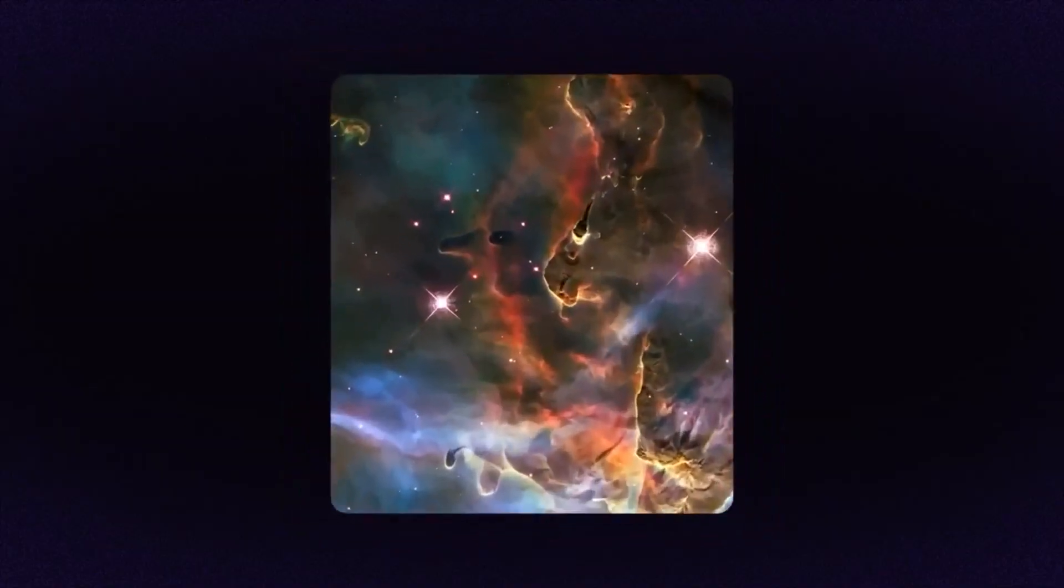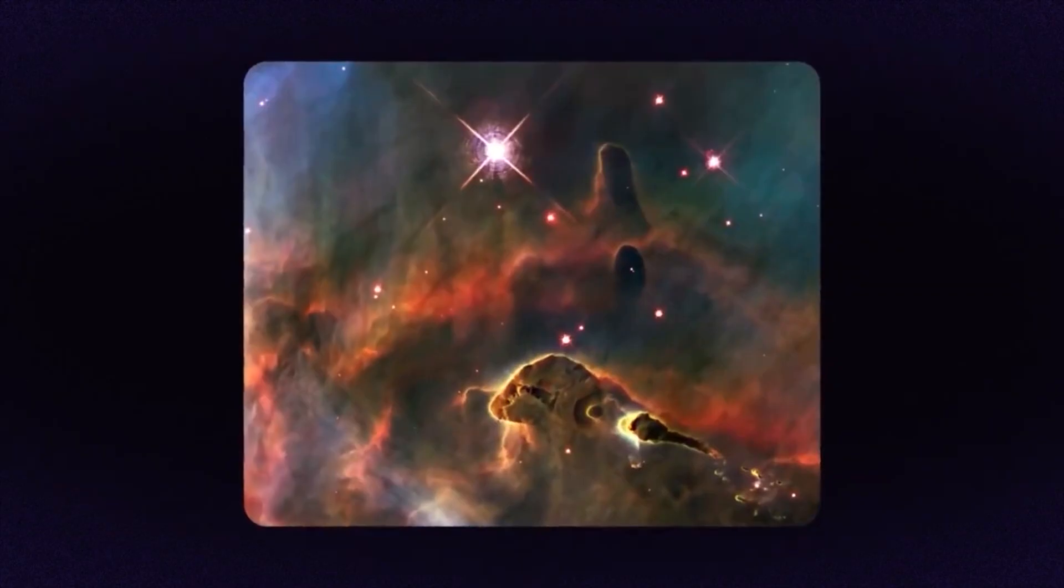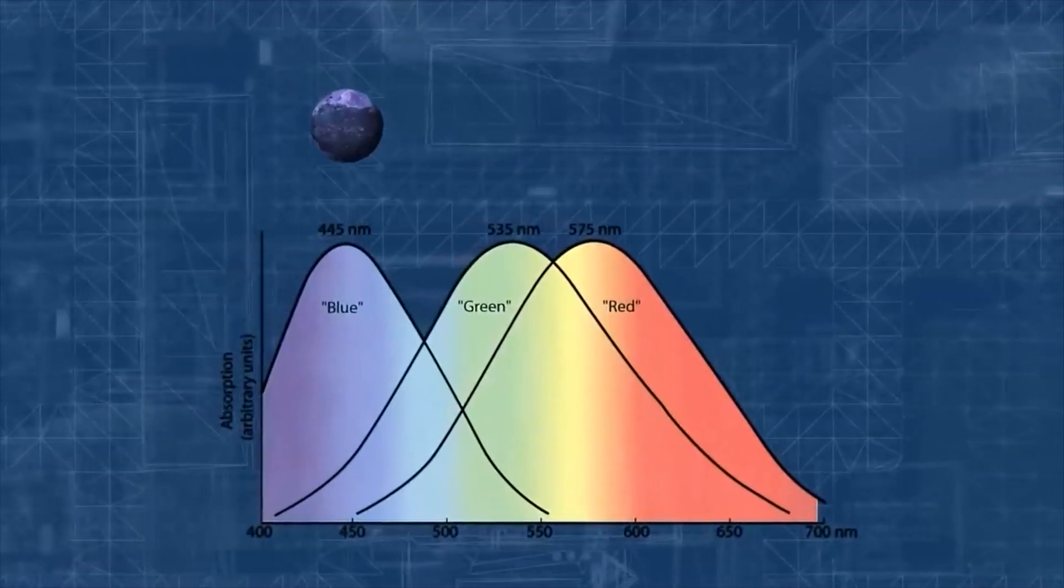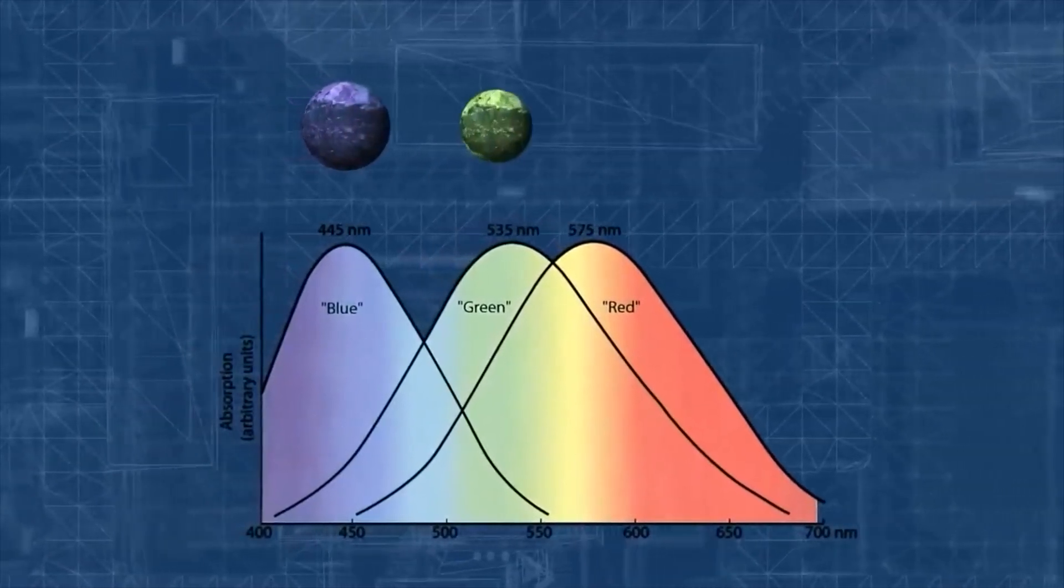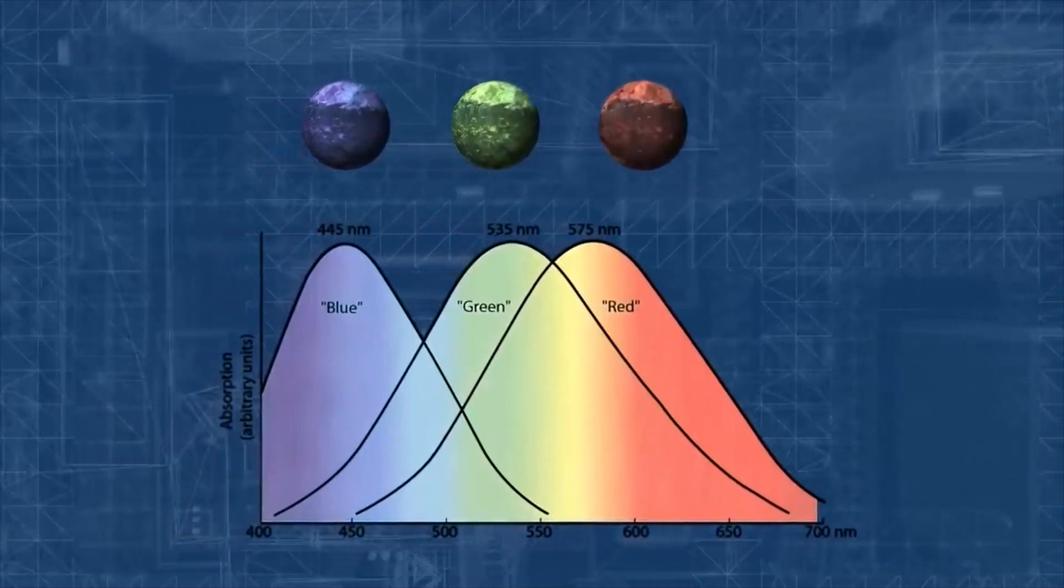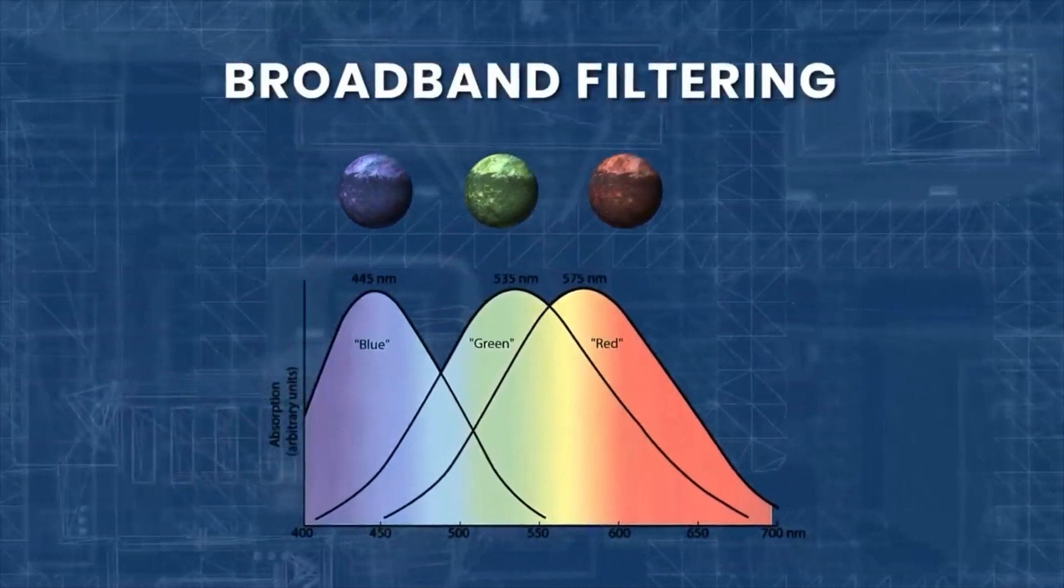What's interesting is that each image for each wavelength is given a different color concerning its position on the color spectrum. Scientists have termed this process as broadband filtering.